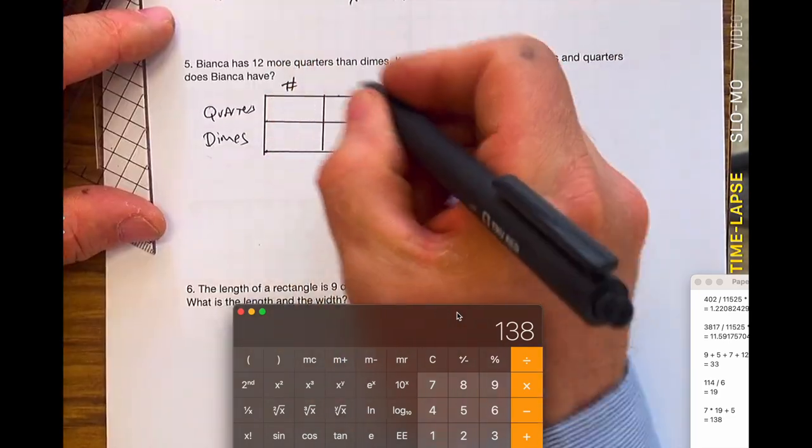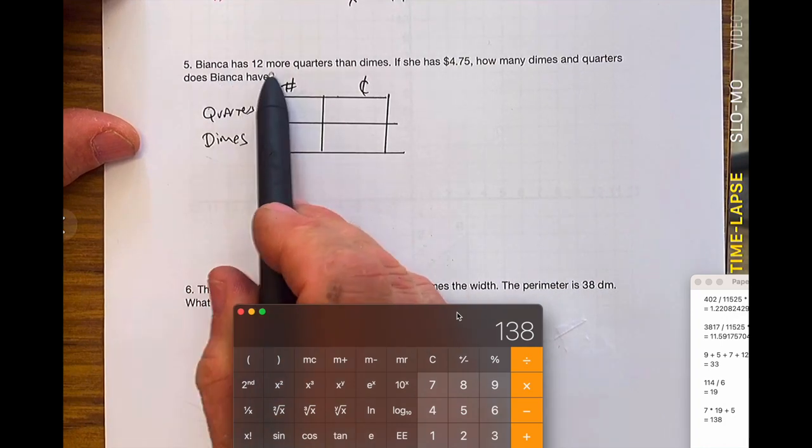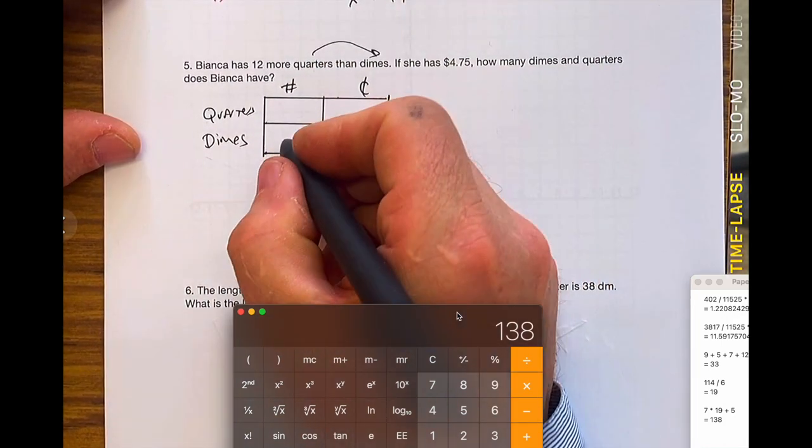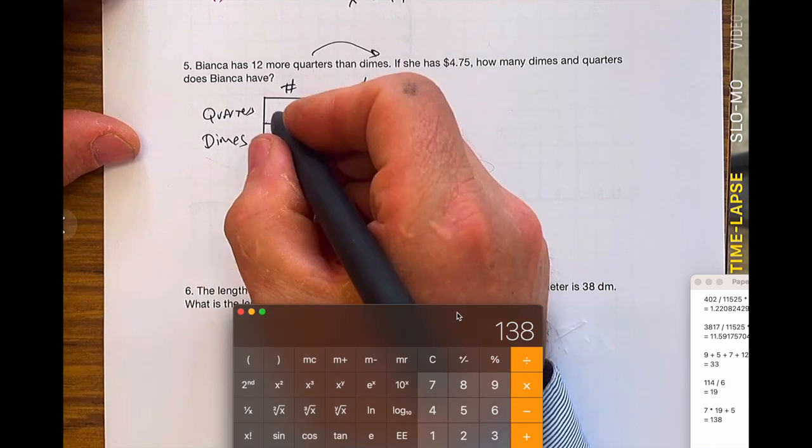We have the number and the value in cents. Bianca has 12 more quarters than dimes. The quarters are compared to the dimes. The dimes are X. 12 more than X plus 12.